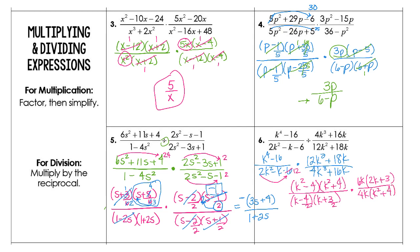Now we're ready to cancel. The k squared plus 4s will cancel. This would end up being 2k plus 3. The k's here will cancel, and we can take a 2 out of both of those. What's left will factor again — the numerator will. So maintaining times 3 halves, we factor k squared minus 4 into k plus 2 times k minus 2, over k minus 2 times 3 over 2. Those will cancel. So our final answer is 3 times k plus 2, all over 2.